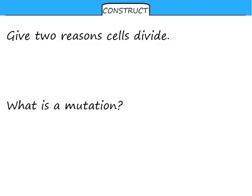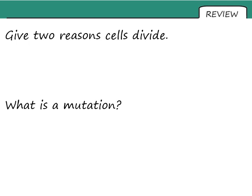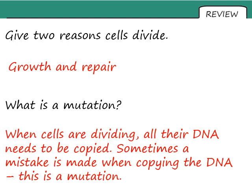I'd like you to have a go at these two questions — please pause here and try them now. So let's go through our answers. What are the two reasons that cells divide? Growth, allowing you to grow, and repair, letting your body fix organs and cells that need to be repaired. What is a mutation? When cells are dividing, all their DNA needs to be copied to make sure the new cell is an identical copy of the original. But sometimes a mistake is made when we copy the DNA, and this is what we call a mutation.